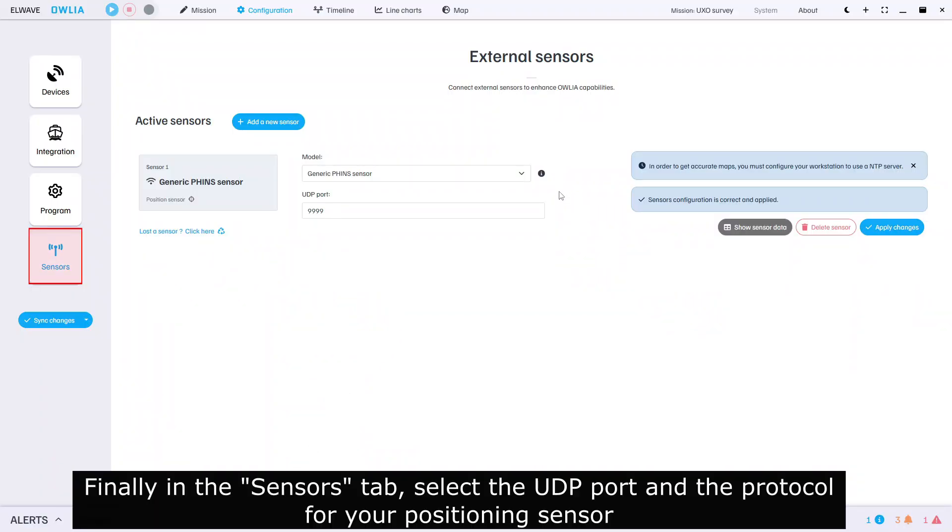Finally, in the sensors tab, select the UDP port and the protocol for your positioning sensor.